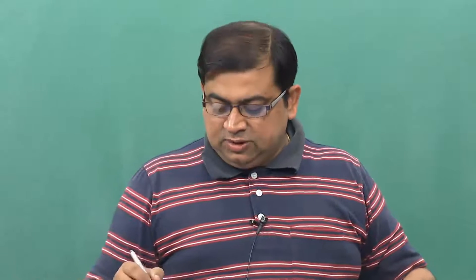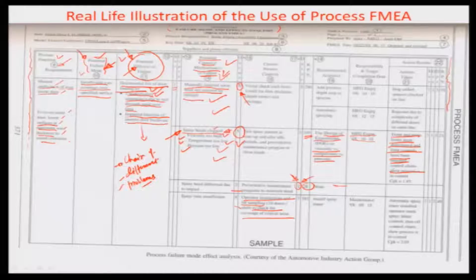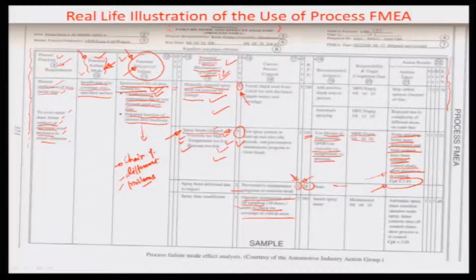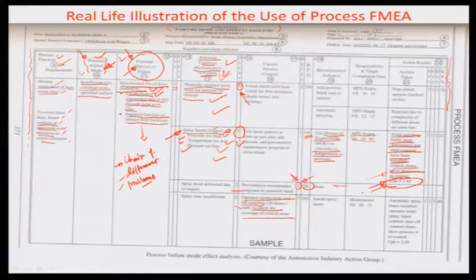After implementing these controls, control charts were plotted and a CPK value of 1.85 was shown for the process. This will be illustrated in detail in later modules. This was a very good optimization experiment suggested by the assembly engineer and implemented by manufacturing engineering.